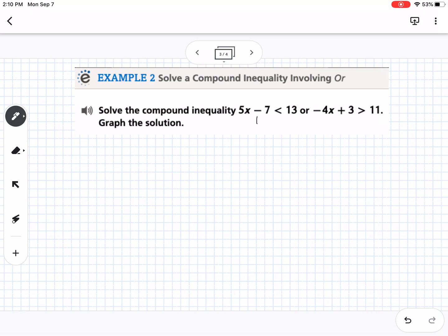So over here, we're going to add seven to both sides. So that gives us five x is less than 20. Then we're going to divide by five. So we get x is less than four. So that's that first one.